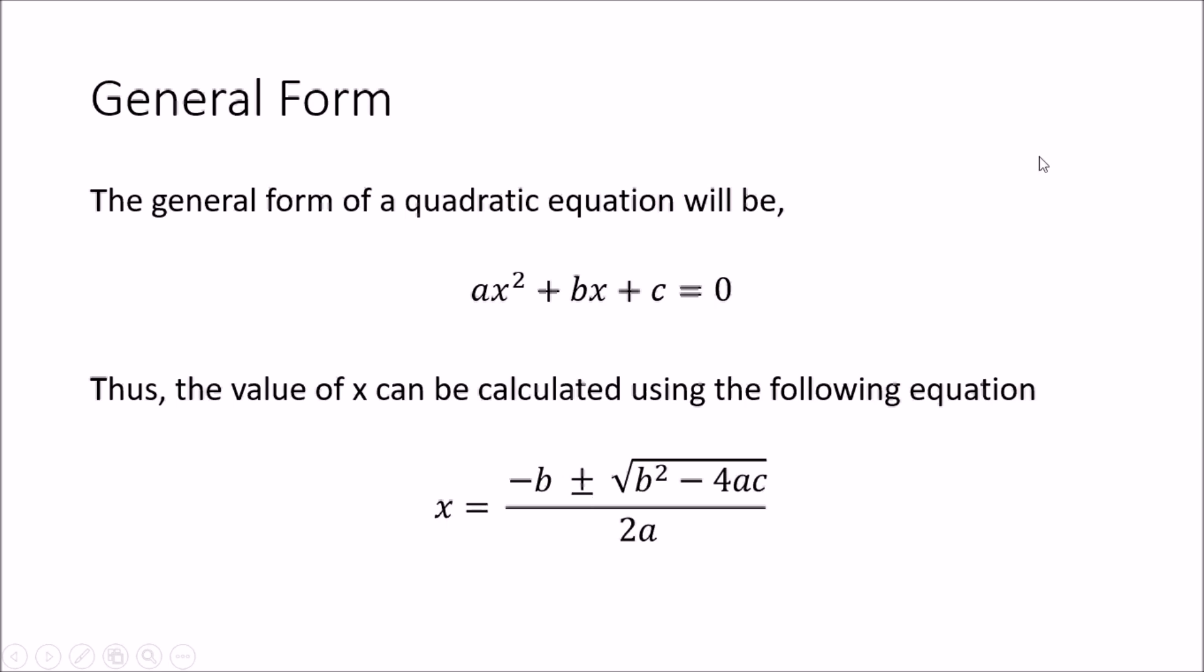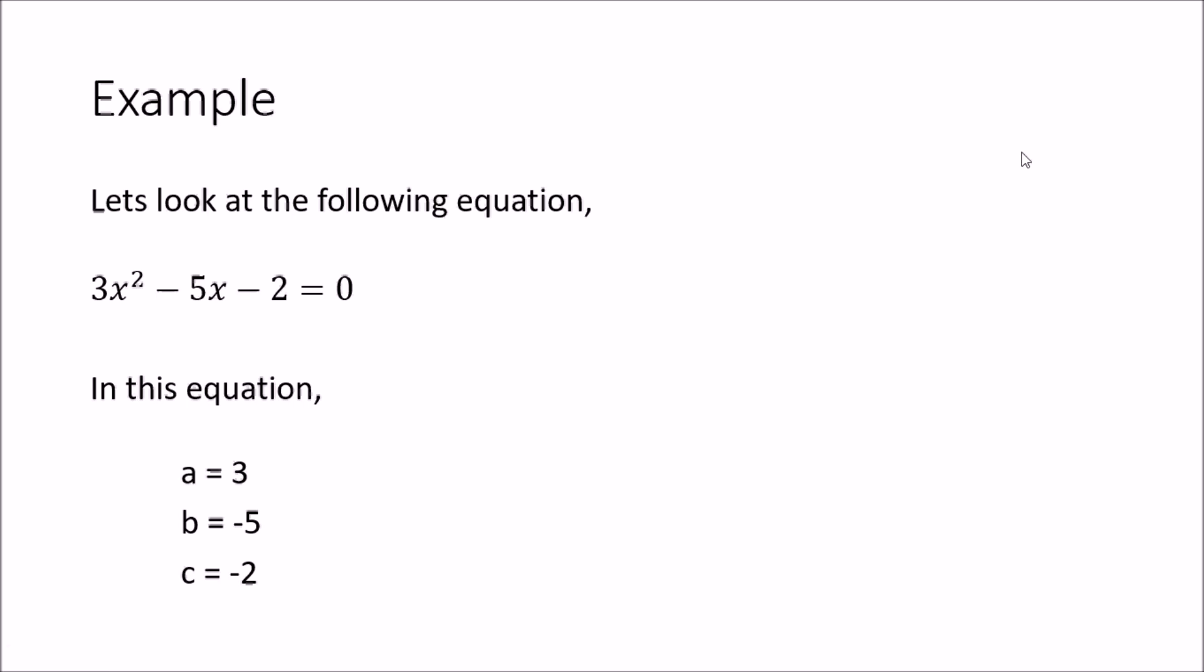Now we will look at an example. This is the example: 3x² - 5x - 2 = 0. So the first thing we have to do is identify what is a, what is b and what is c.